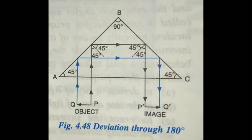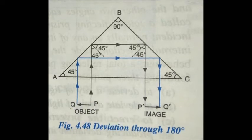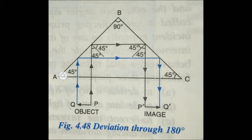Now let us see how a total reflecting prism is used to deviate a beam of light through 180 degrees. PQ is an object from which a beam of light is incident on face AC of the prism. Since it is normal incidence, the ray enters undeviated and strikes face AB at an angle of incidence of 45 degrees. Since you are in class 10, you can verify the angle values yourself.